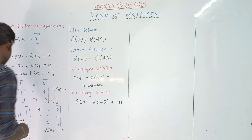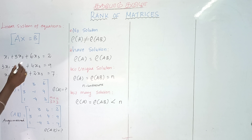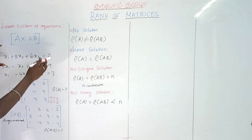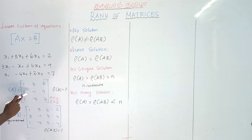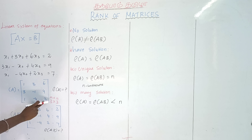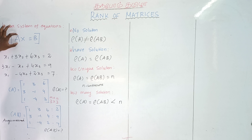What is this matrix? It is 1, 3, 6, 3, minus 1, 4, 1, minus 4, minus 4, 2. That is the coefficient matrix.